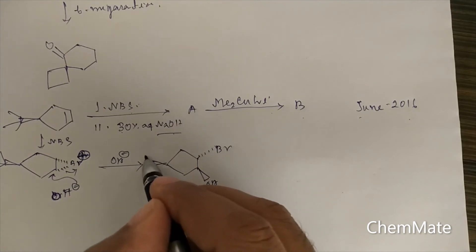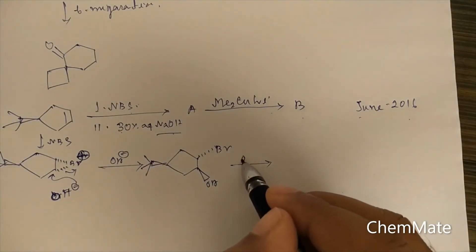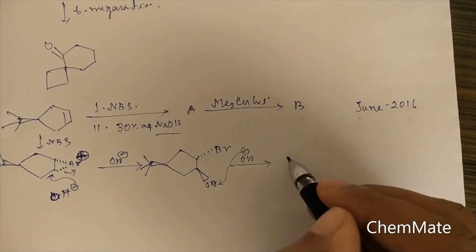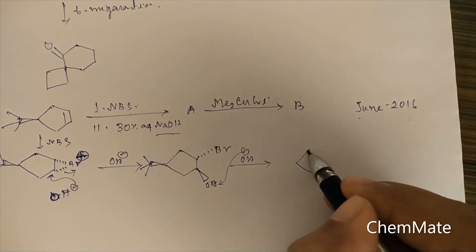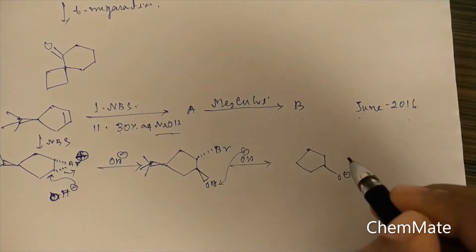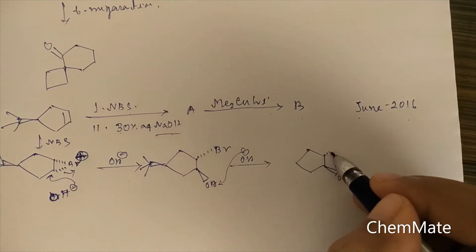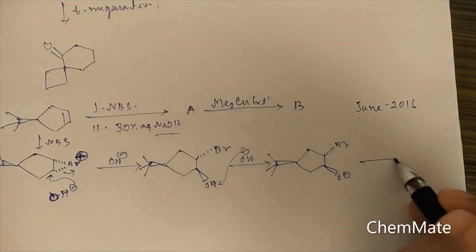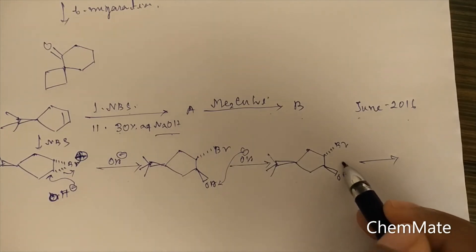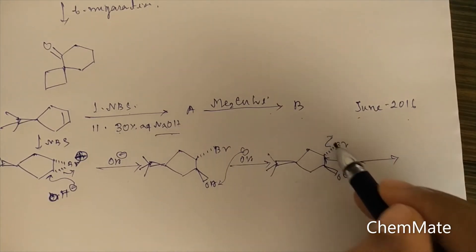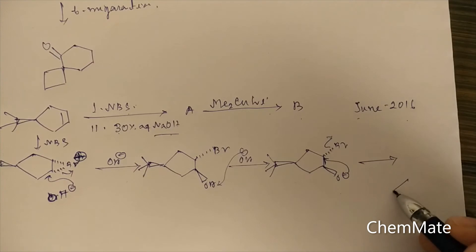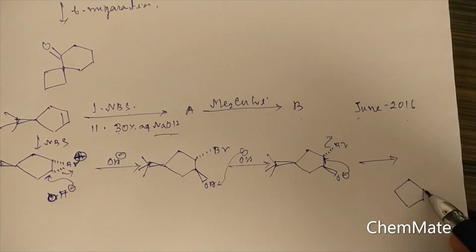The tertiary butyl group is above the plane. In the presence of OH⁻, the proton on the halohydrin OH is abstracted, giving an O⁻ from above the plane, while Br remains below the plane. This O⁻ attacks the carbon bearing Br, forming an epoxide ring above the plane. So the product is an epoxide with the ring above the plane and the tertiary butyl group also above the plane.